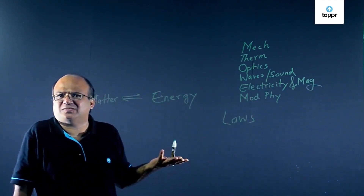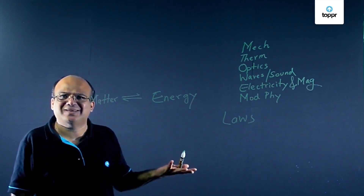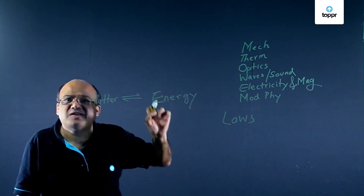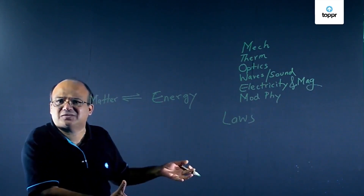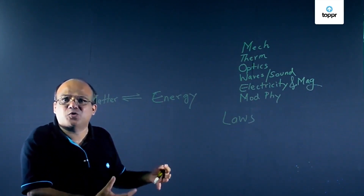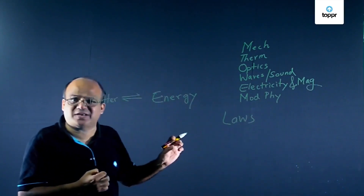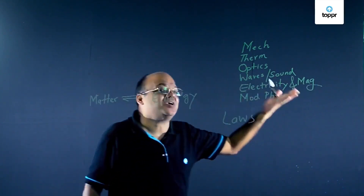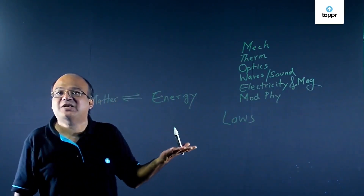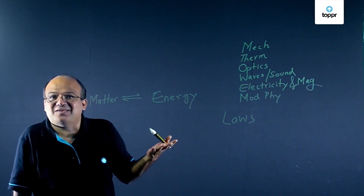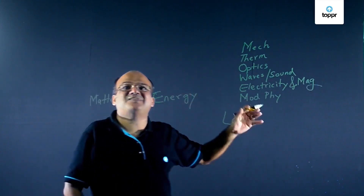What are these physical quantities? Temperature is a physical quantity. Time is a physical quantity. These are measurable quantities. We can measure time. We can measure temperature. And these quantities we use in laws of physics. Therefore, physical quantities are measurable quantities that are used in laws of physics. Temperature we can measure with a thermometer. Mass we can measure with a weighing scale.